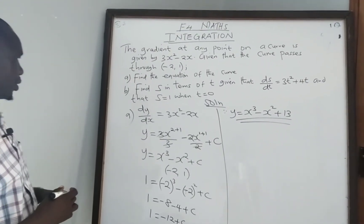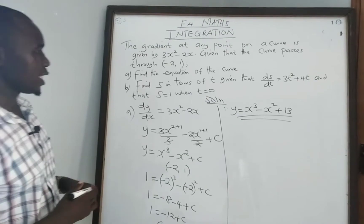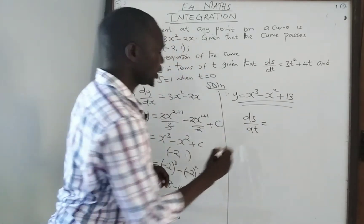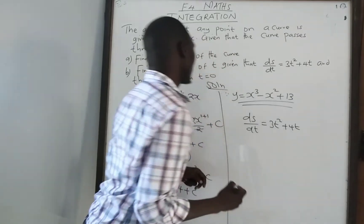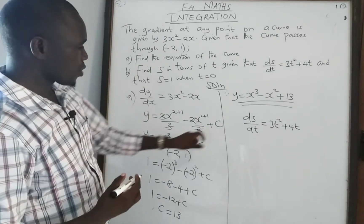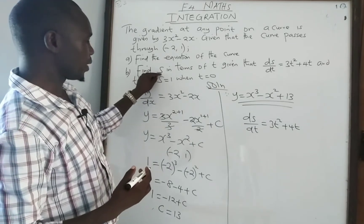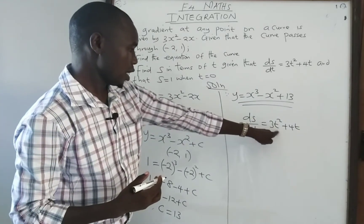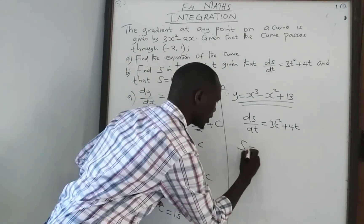Moving to part b: find s in terms of t, given that ds over dt equals 3t squared plus 4t, and s equals 1 when t equals 0. Since we have been given the differential function and are supposed to find displacement, we are going to integrate this gradient function to get our displacement s.